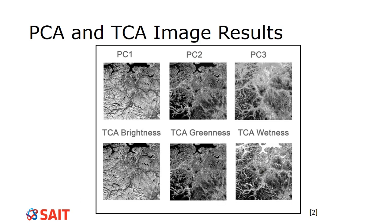I wanted to show a few image results from the first three bands of a Landsat 8. You can see that PC1 and TC1 brightness look very similar, though there's a little bit more contrast in the PC1, especially in certain areas. PC2 looks at variance, and TCA greenness has similarities to PC2 — TC2 has a bit more information, but they look very much the same. PC3 and TCA wetness show a lot of difference: the wetness band shows very clearly where the water is, very bright, whereas PC3 doesn't pick it out as clearly.